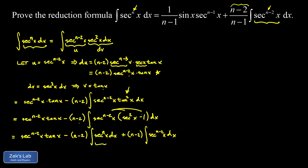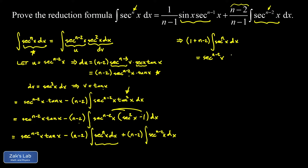We can see encouraging results: we have an integral of secant to the n minus two of x with coefficient n minus two, and a copy of the original integral — just like the integration by parts looping trick. Since there's a term with the integral of secant to the nth of x on the right-hand side, we add n minus two times that integral to both sides. On the right-hand side, we also replace tangent with sine over cosine to work toward our target form.